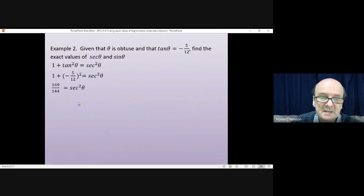And then to find sec theta, we'll square root that. The square root of 169 over 144 is 13 over 12. But there is a problem. It could be plus 13 over 12. Or it could be minus 13 over 12.